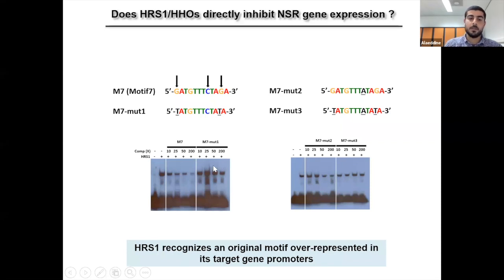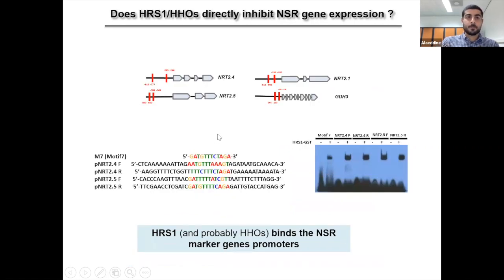As you can see here, the use of up to 200 times excess of cold oligos mutated in either the two guanines or in the three other residues, the use of an excess mutated probe of this motif does not compete with the wild type version. However, the oligo mutated only in this cytosine does compete with the oligo. So this means that unlike the cytosine, the two guanines are crucial for this binding.